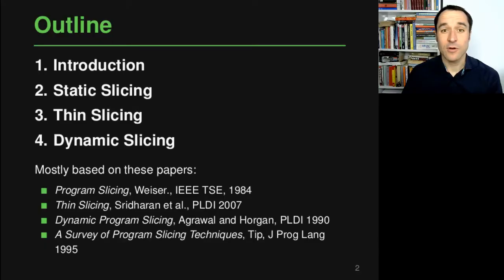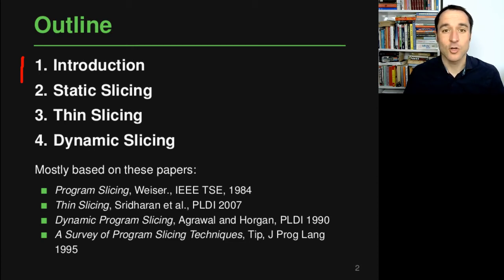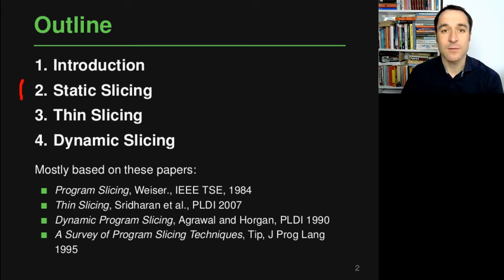Here is a rough outline of the lecture. This lecture will consist of four parts, each with their own video. We are now in this first part where I'll give an introduction into the problem of program slicing and an overview of techniques that exist. Then we look into one set of these techniques, namely static slicing — techniques that do not execute a program but rather analyze its source code in order to extract a slice.